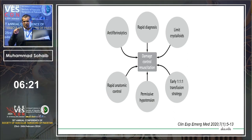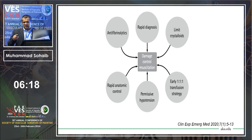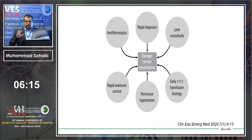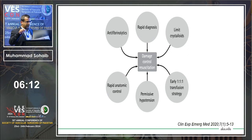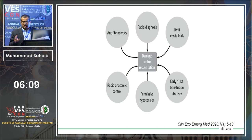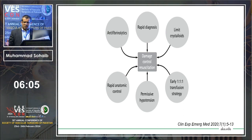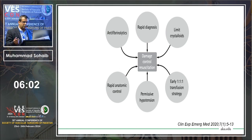Where does cryoprecipitate stand? A recent NHS trial — the CRYOSTAT trial — gave early high empirical cryoprecipitate to see whether it prevented mortality and morbidity. There was no significant difference. Therefore, fibrinogen levels should guide cryoprecipitate administration rather than empirical dosing.